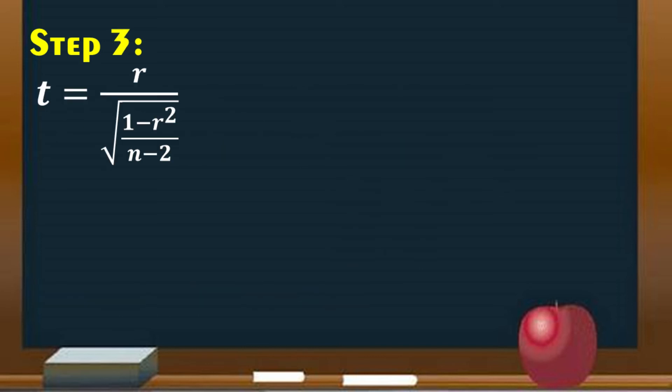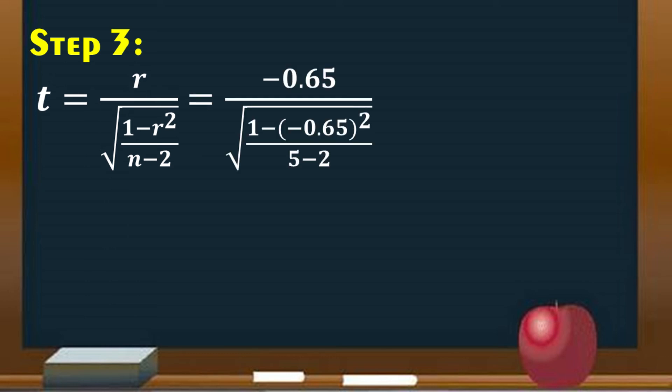Step number three: compute the test value. Given the formula, substitute the values of N and R. Then simplify to get the computed T-value.